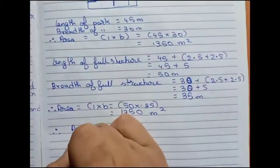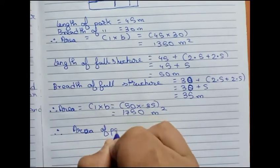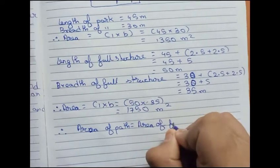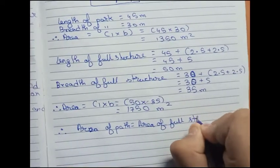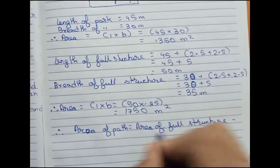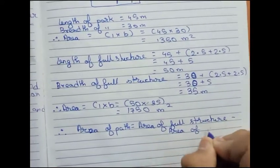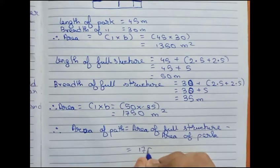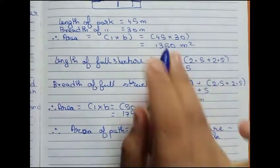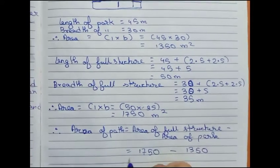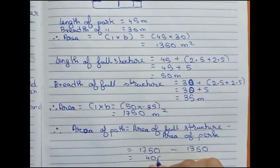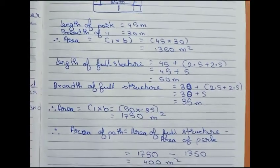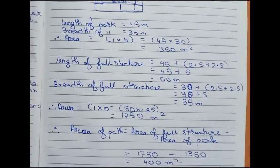Now, area of path equals area of full structure minus area of park. That is 1750 minus 1350, which becomes 400 meter square. So the area of the path is 400 meter square, and this is our final answer. Thanks for watching this video — please subscribe to my channel for more solutions.